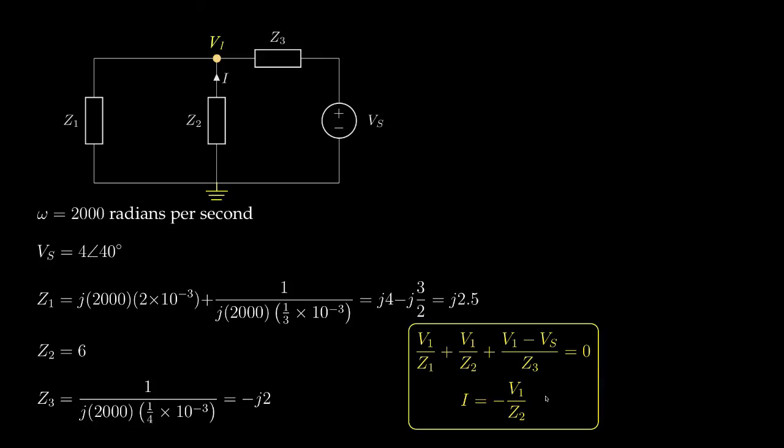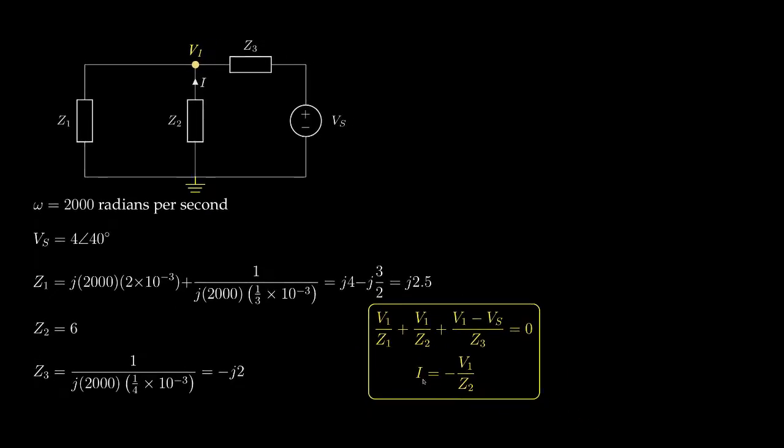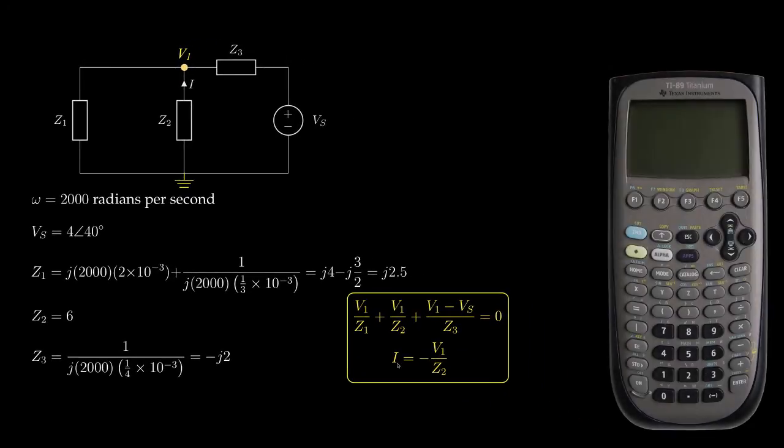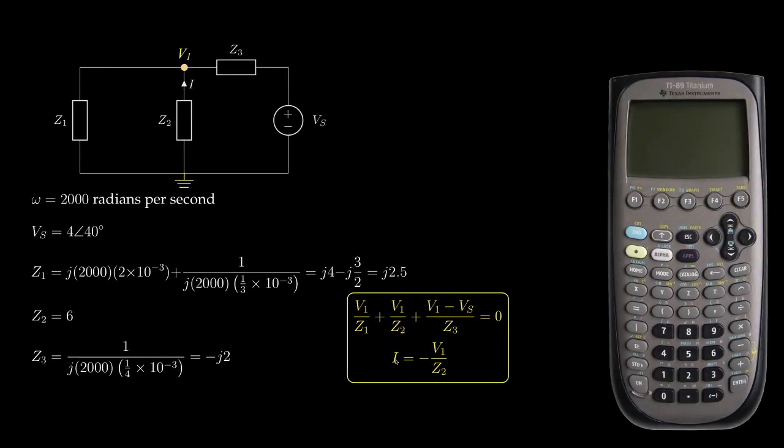Now, at this point, we could use several tools, such as a calculator or a software package like MATLAB, to solve for the unknown voltage V1 and this unknown current I. And because the TI89 calculator is a very popular tool for students studying circuits, I'd like to finish this example by once again demonstrating how to use this calculator to solve for the unknown voltage and ultimately the unknown current I.